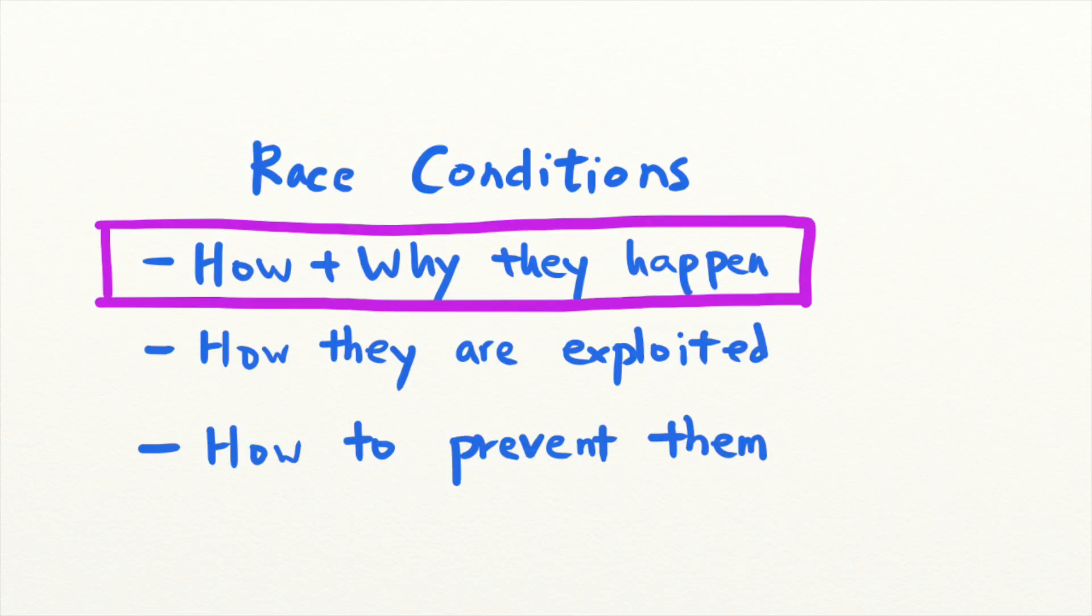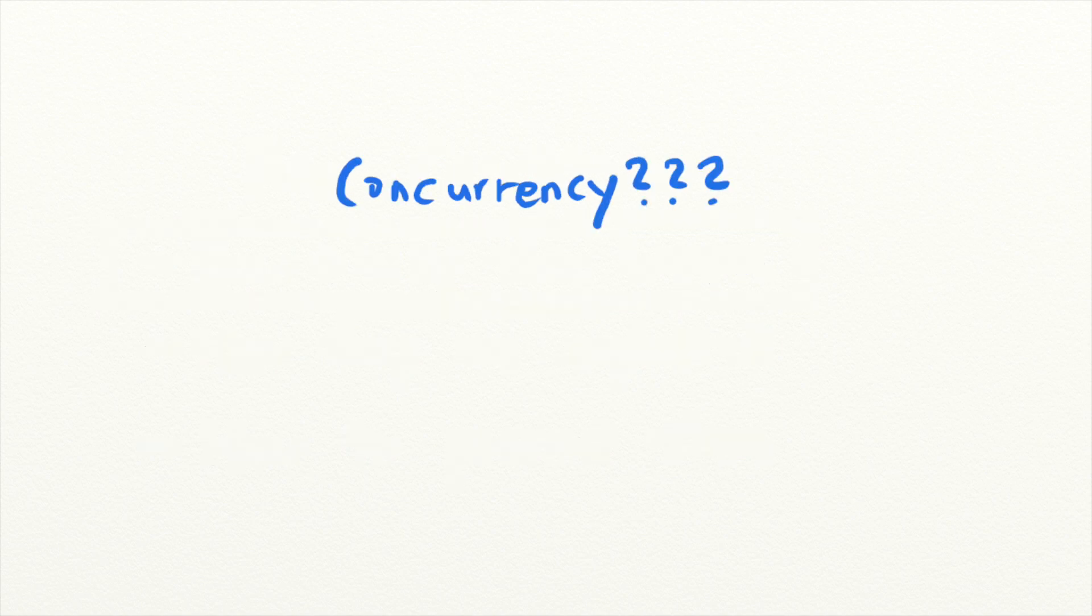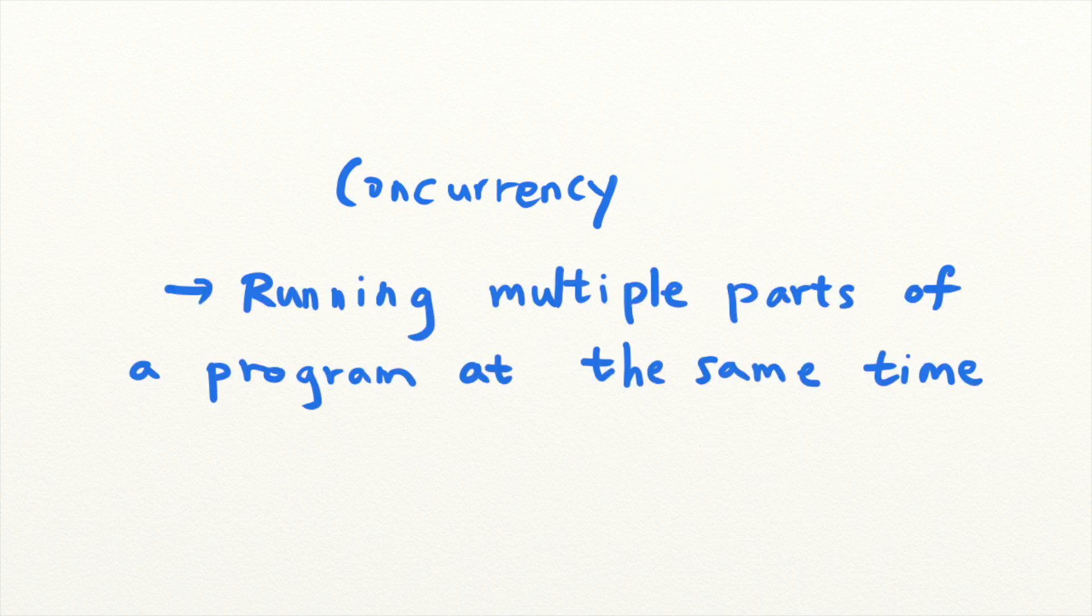Before we dive into the ins and outs of race conditions, you need to first understand what concurrency in computing is. In computer science, concurrency is when different parts of a program can be executed simultaneously without affecting the outcome of the program.